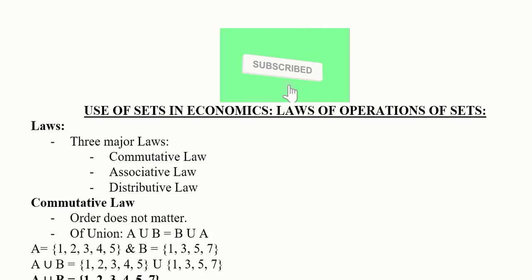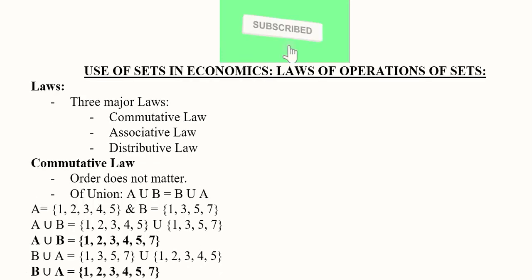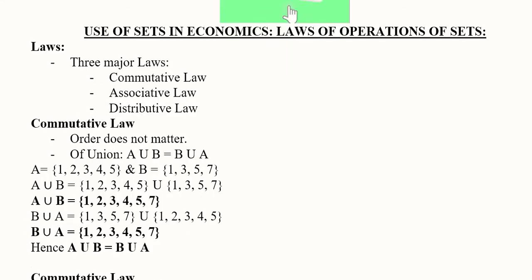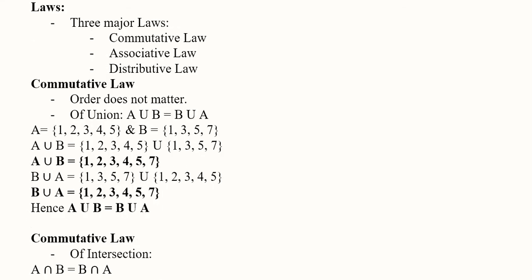Hi there. In this lecture we'll talk about the laws of operations of sets. There are basically three major laws: the first is the commutative law, the second is the associative law, and the third is the distributive law. We'll talk about these laws one by one.